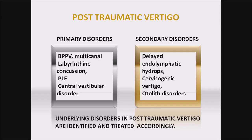Posttraumatic vertigo in children: two types — primary and secondary disorders. Primary disorders include BPPV (usually multi-canal in posttraumatic cases), labyrinthine concussion, perilymphatic fistula, and central vestibular disorders. Secondary disorders include delayed endolymphatic hydrops, cervicogenic vertigo, and otolithic disorders. Underlying disorders in posttraumatic vertigo are identified and treated accordingly.